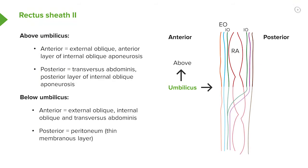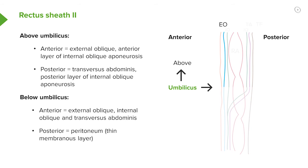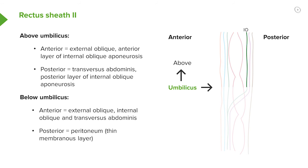Continuing posteriorly, we have transversus abdominis, shown in purple above the umbilicus. And most posteriorly we can see transversalis fascia in black, which is then the peritoneum. So above the umbilicus the layers are: external oblique, anterior layer of internal oblique, rectus abdominis, posterior layer of internal oblique, transversus abdominis, and then transversalis fascia.